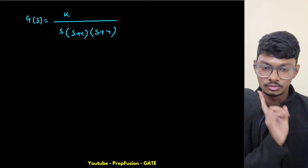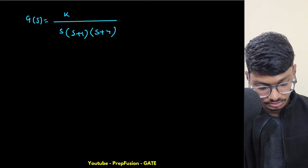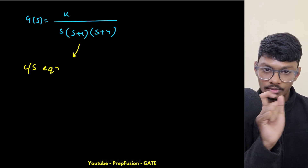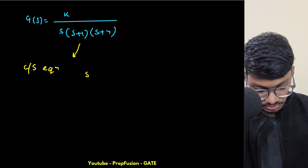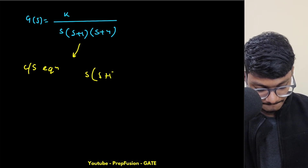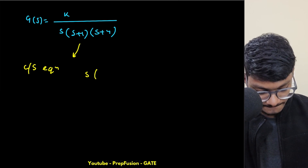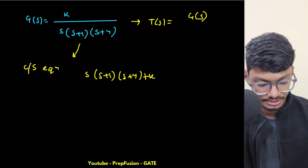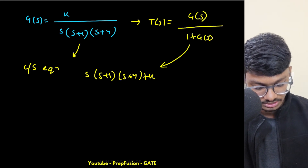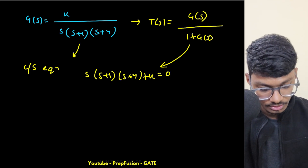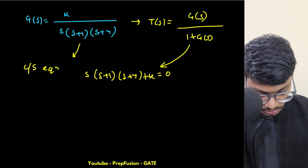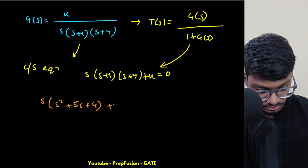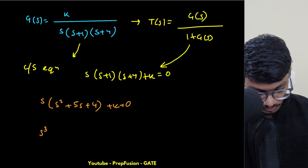We can derive the characteristic equation in two methods — either from the root locus or directly. The characteristic equation comes from 1 + G, so it is s(s+1)(s+4) + k = 0. Expanding: s² + 5s + 4, giving us s³ + 5s² + 4s + k = 0.